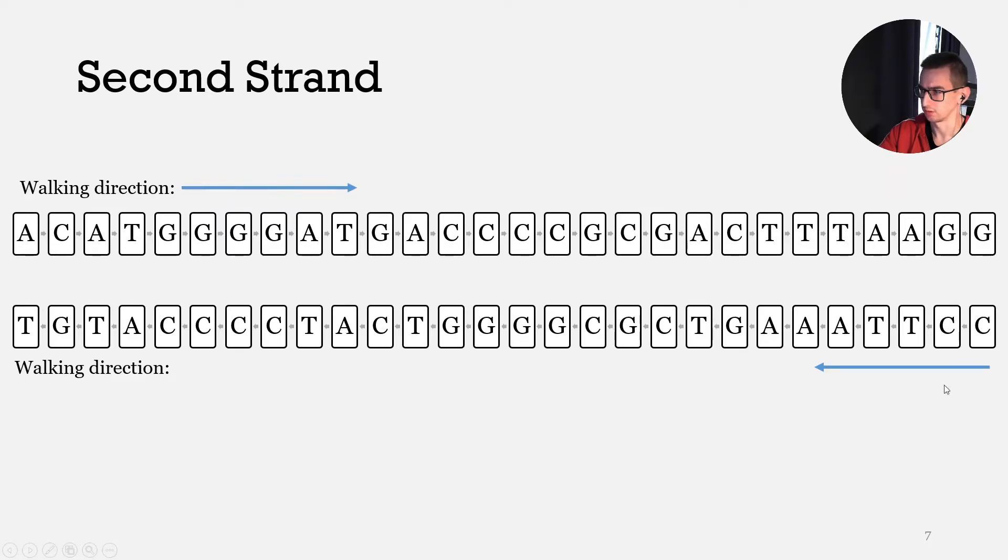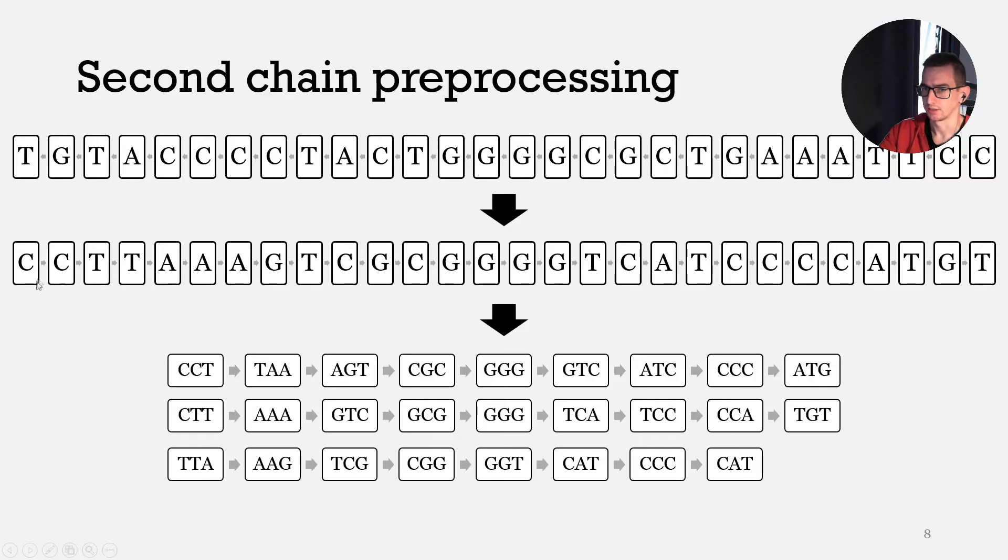Let's look at the second DNA strand. First of all, let's rewrite it. Now we go from the right side to the left. Let's rewrite it, and here we go from left to right. Let's repeat all steps which we performed for the first DNA strand and find all possible triplet sequences.